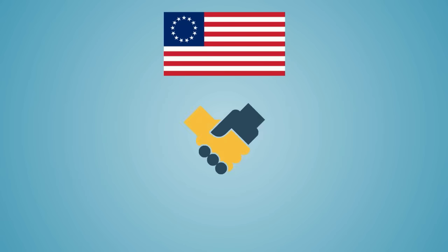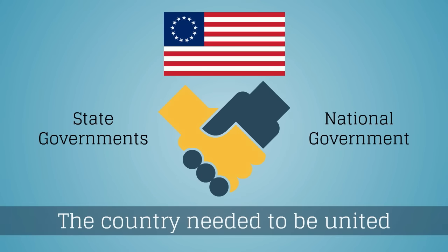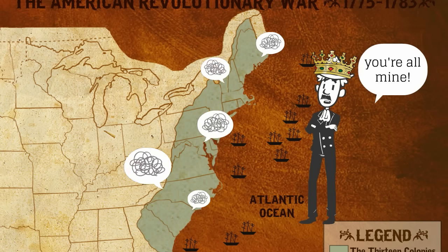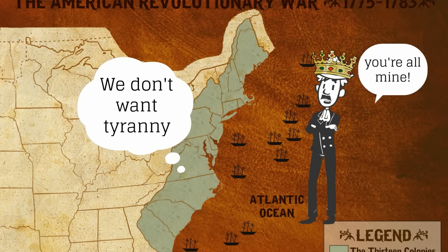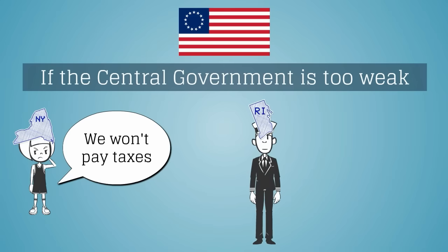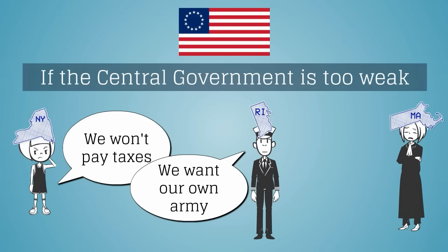However, many Americans realized they needed a central government strong enough to unite the country. On the one hand, state governments did not want a national government so strong that there would be tyranny, but a central government that was too weak could not unite the country.